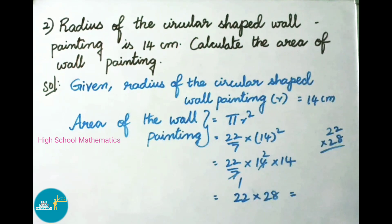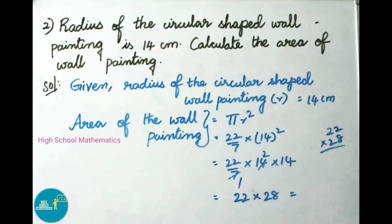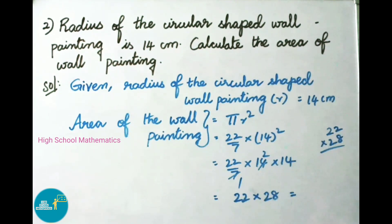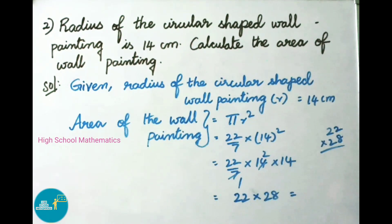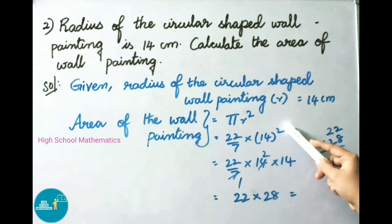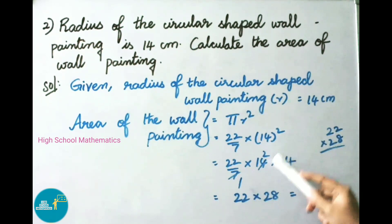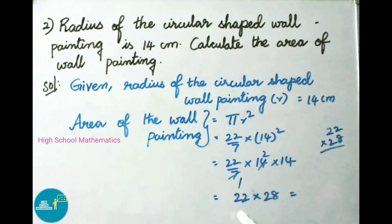Area of the wall painting formula is pi R squared. Since the painting is circular shaped, we have taken the area of circle formula, that is pi R squared. That equals 22 by 7 into 14 whole squared, which equals 22 by 7 into 14 into 14. 7 ones are 7, 7 twos are 14. That equals 22 into 2, and 14s are 28.